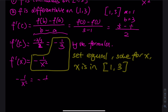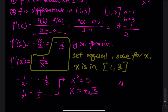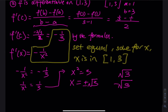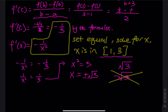Multiplying both sides by −1 gives 1/x² = 1/3. Taking reciprocals on both sides gives x² = 3, so x = ±√3. Since we're working on the interval [1, 3], we discard x = −√3. Because √3 ≈ 1.73 is in the interval [1, 3], we conclude that c = √3.